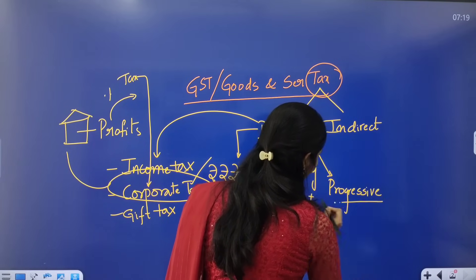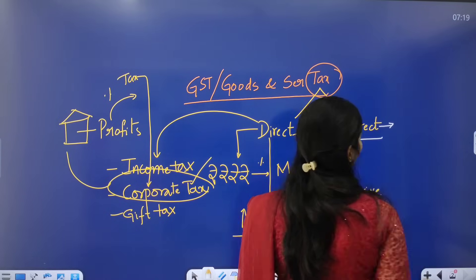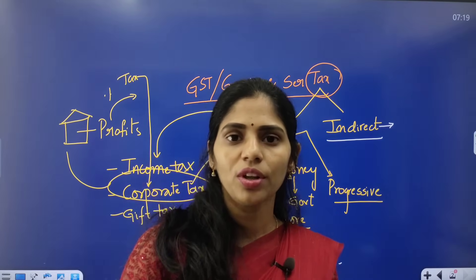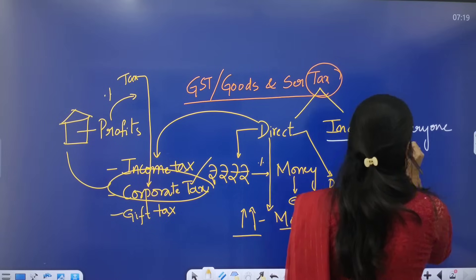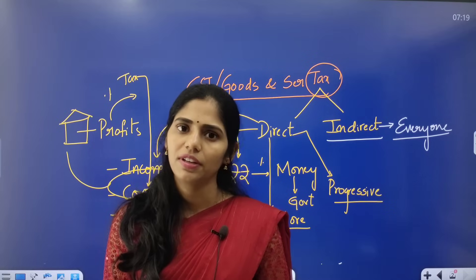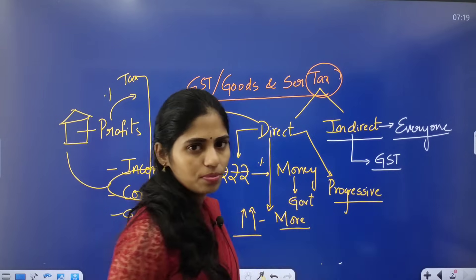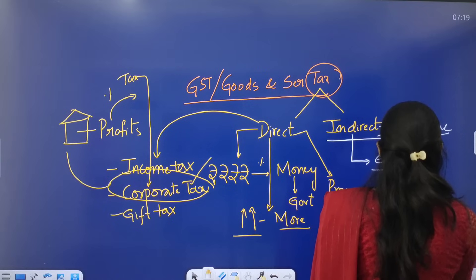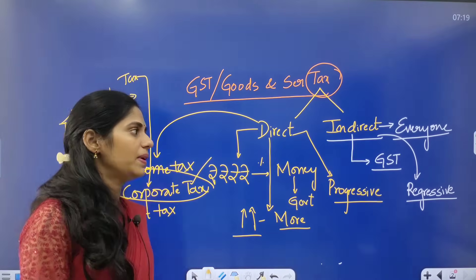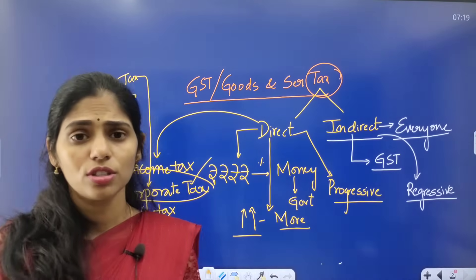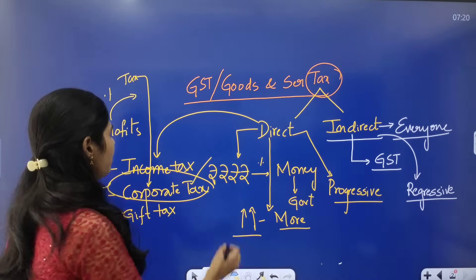Indirect tax does not differentiate between rich and poor — everyone has to pay the tax regardless of their financial status. GST is an indirect tax, so everyone must pay it. This type of tax can be called a regressive tax because even poor people must pay, and the poor are most affected by indirect taxes.